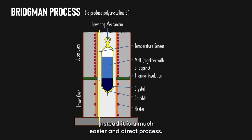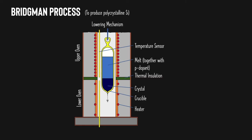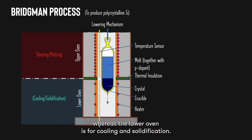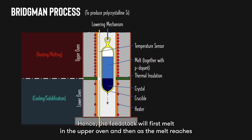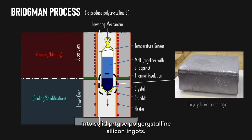In the Bridgman process, however, there is no need for a seed crystal. Instead, it is a much easier and direct process. Solar-grade silicon feedstock is first contained in a crucible together with p-dopants and then lowered into a chamber. The chamber is divided into two ovens: the upper oven for heating and melting, whereas the lower oven is for cooling and solidification. The feedstock melts in the upper oven and then, as it reaches the lower oven, solidifies into p-type polycrystalline silicon ingots.